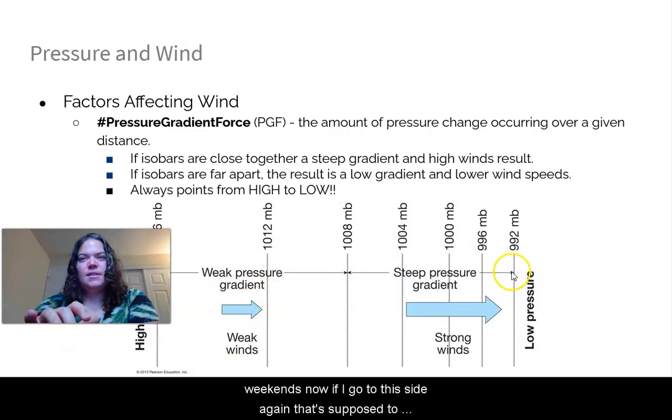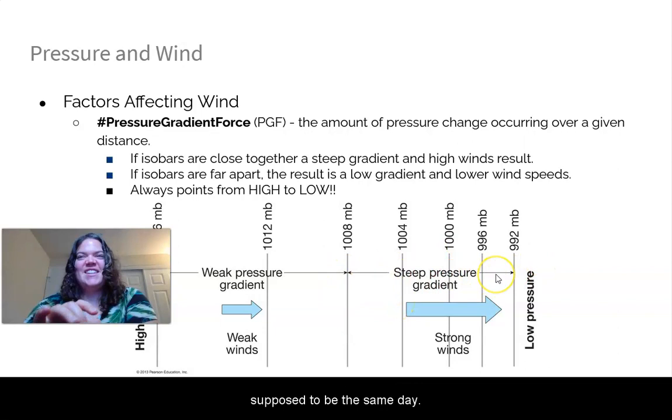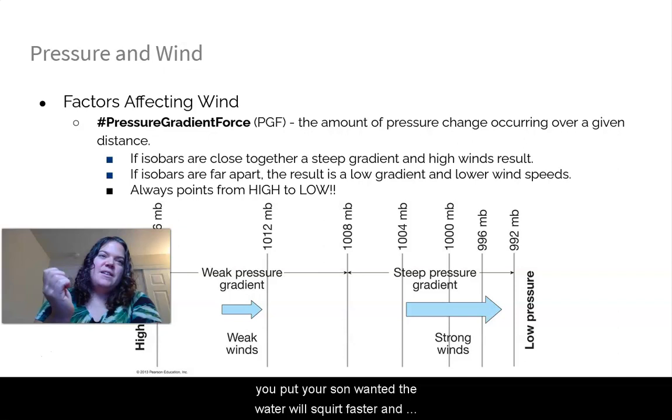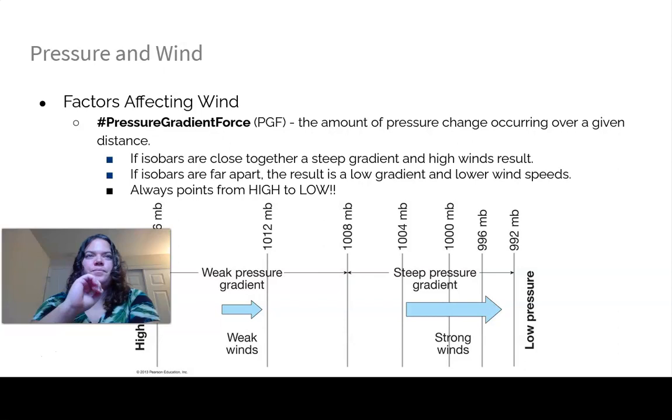If I go to this side, if I go from 1008 to 992, that's a difference of 16. It's doubled. So there's a double difference here, 16 millibars. So that's a steep pressure gradient, and there are strong winds. Think of it as like when you put your thumb on the hose. If you have a free-flowing hose, the water is squirting out, and then you put your thumb on it, the water will squirt faster. This is the same thing here. So PGF will actually generate wind.